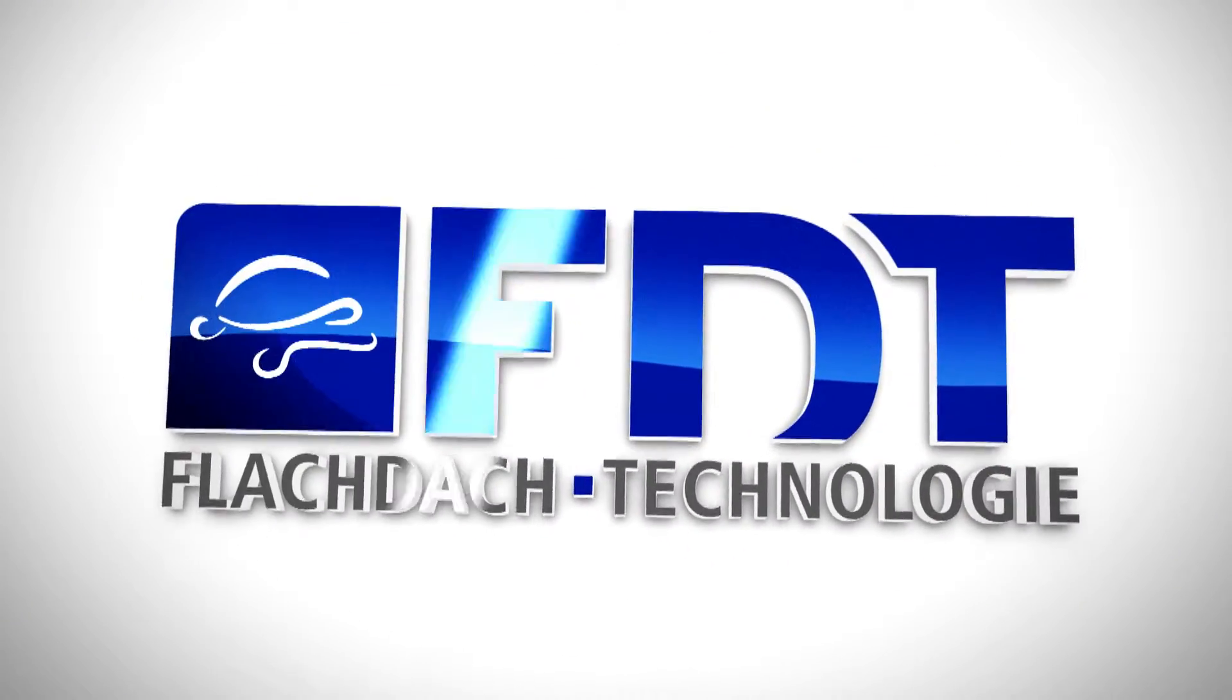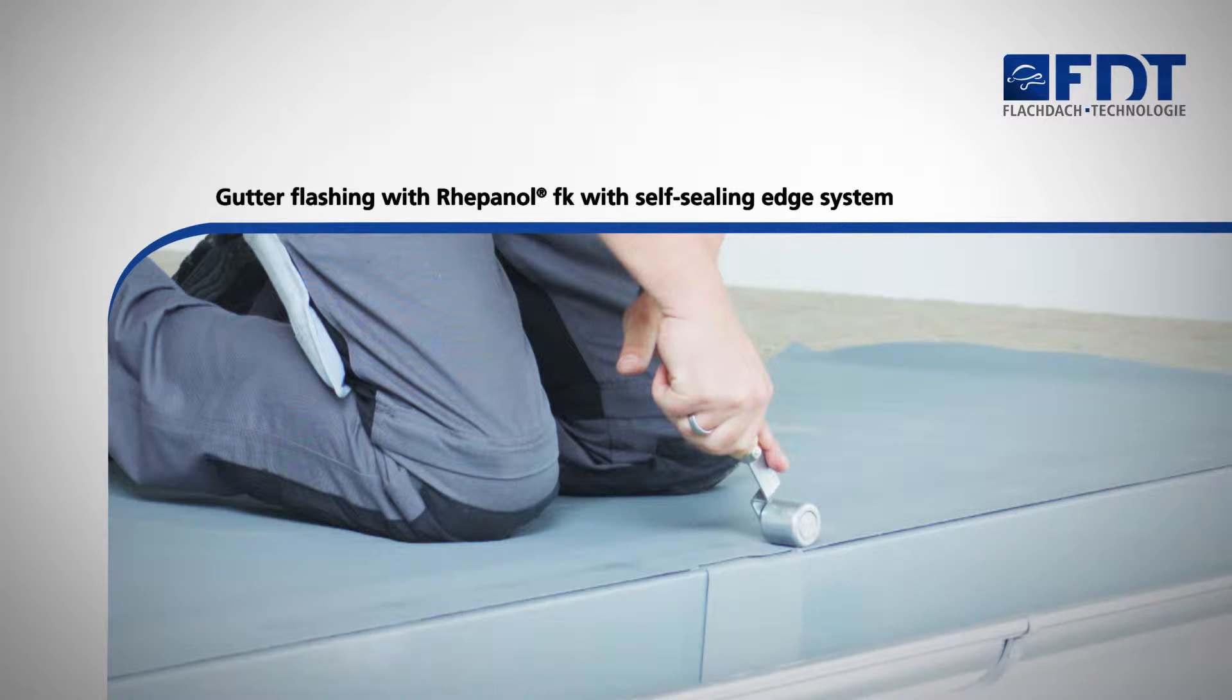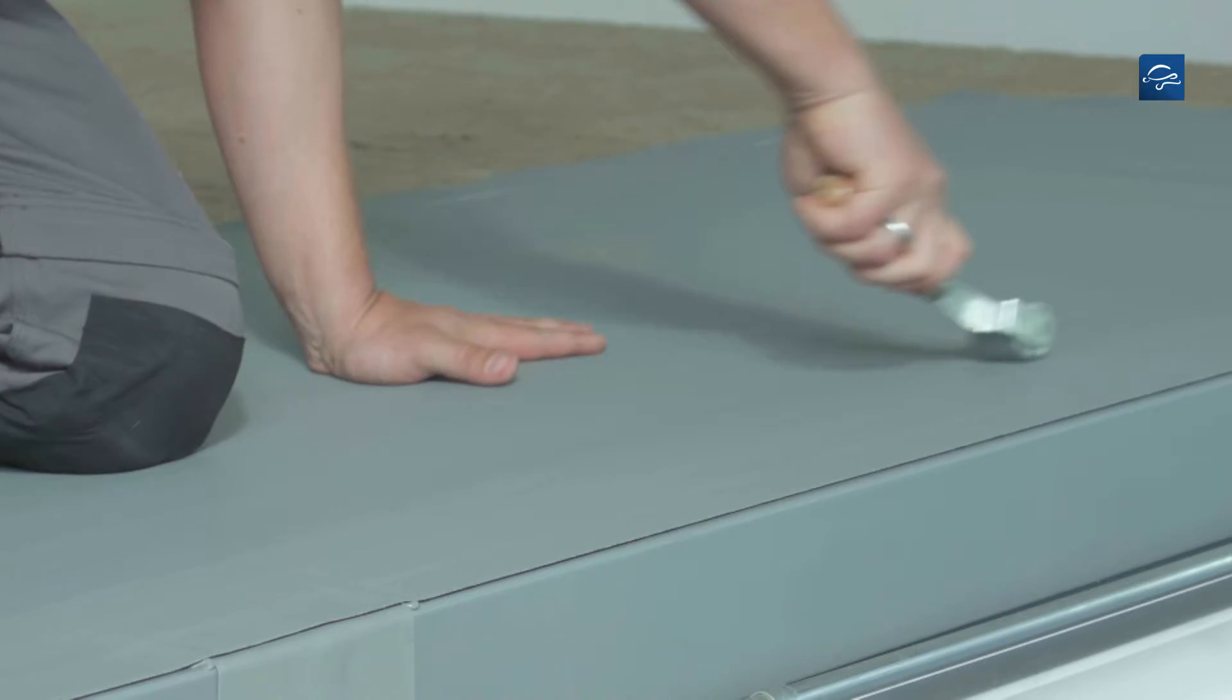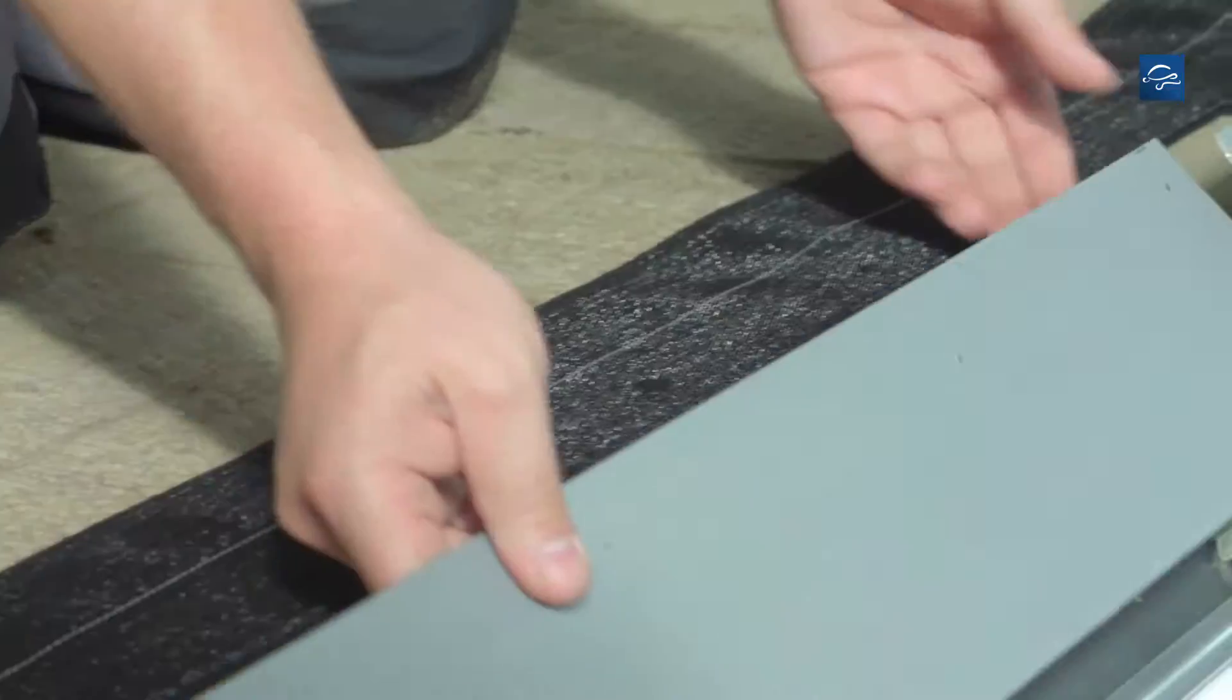FDT Flachdach Technologie. This video shows you how to flash the gutter against the roof ceiling. Gutter flashing at the roof perimeter is carried out using Repanol coated metal sheets.